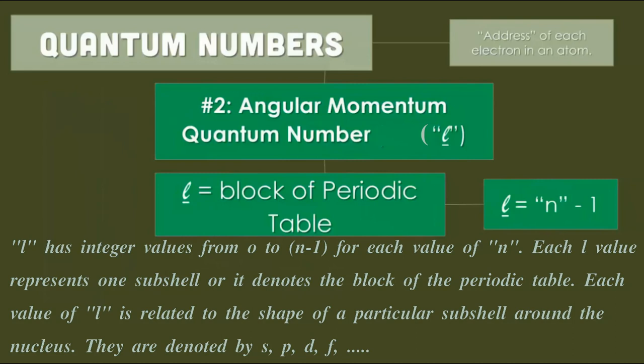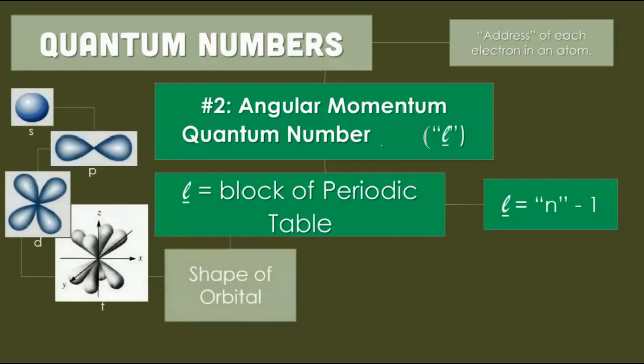Each value of l is related to the shape of a particular subshell around the nucleus. They are also denoted by s, p, d, f, and so on. Look here - block of periodic table, that is s block, p block, d block, and f block, and also shape of orbitals are given here.